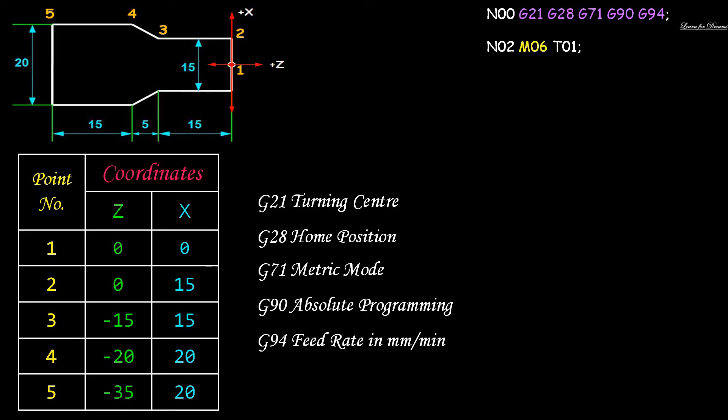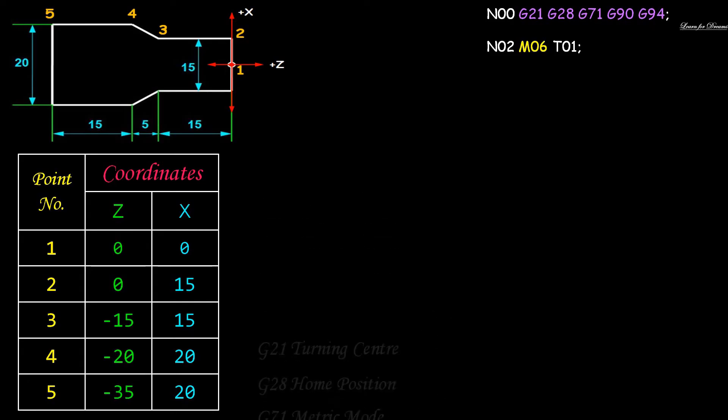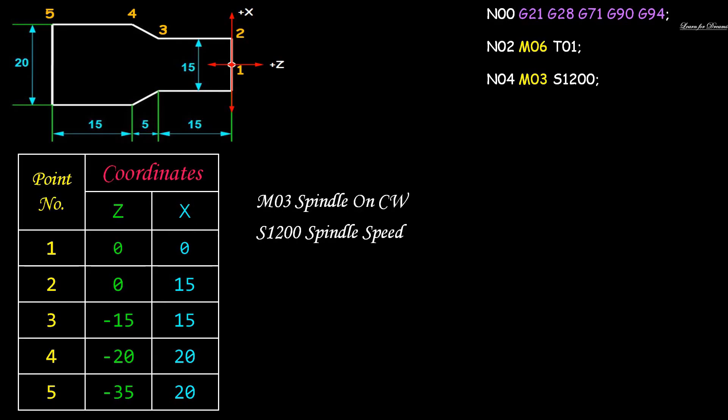Next line is N02 M06 P01. M06 is tool change and T01 is tool number. Next, N04 M03 S1200. Here M03 is spindle speed in clockwise direction and S1200 is spindle speed. Next is N06 M08 which is coolant on.